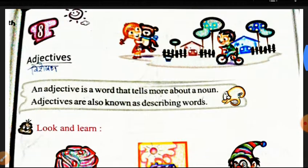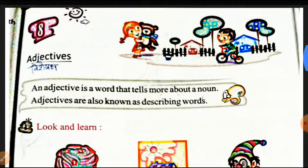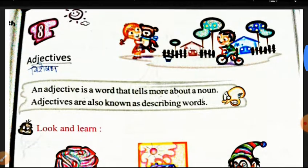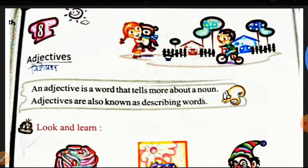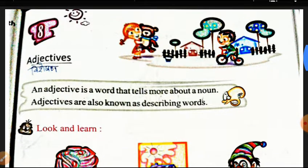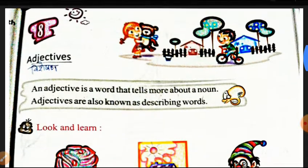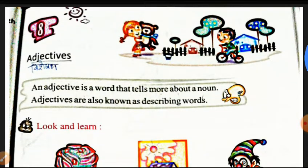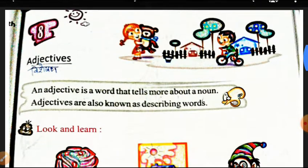We have studied nouns and kinds of nouns, common nouns, and genders too. Today we will study nouns — the name of a person, place, animal, or thing.